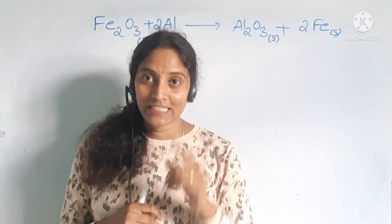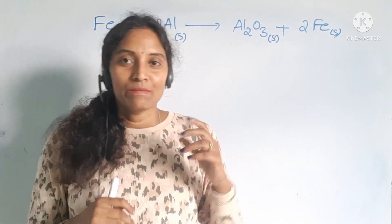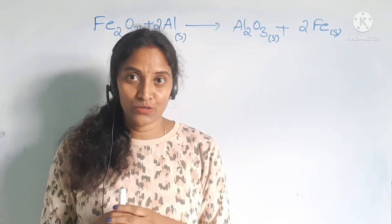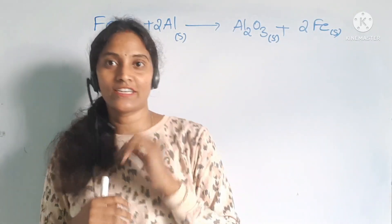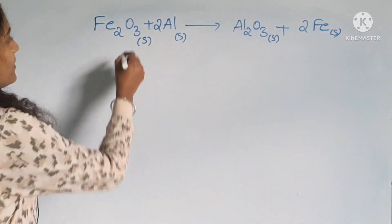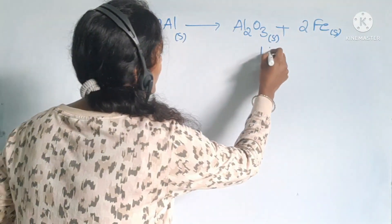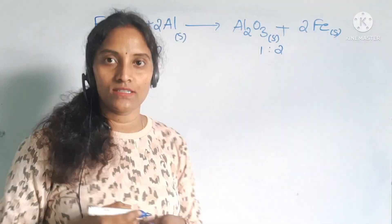This is the first point. Second point is: balanced chemical equation gives ratios of reactants and products. Here, 1 to 2 ratio of reactants will give you 1 to 2 ratio of products.